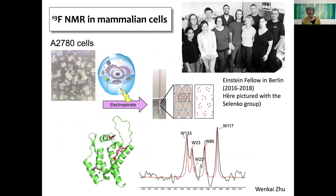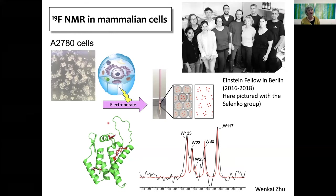We also collaborated successfully with Tatiana Polenova's group at the University of Delaware, integrating solution fluorine NMR with solid-state fluorine NMR. In the solid state, on large assemblies like the HIV capsid tube, you can measure fluorine-fluorine distances up to 20 angstroms. During 2016-2018, I was an Einstein Fellow in Berlin, spending time in Phil Selenko's group and learning about in-cell NMR. I'm now applying fluorine NMR in mammalian cells — since cells have very little fluorine, if I introduce a fluorinated protein into a cell, I can follow it and probe its interactions in the cellular environment.